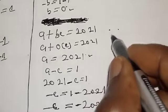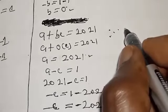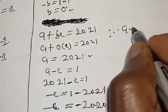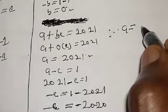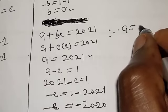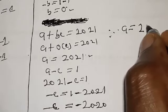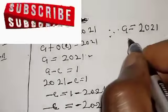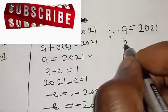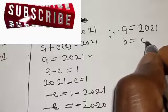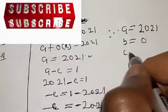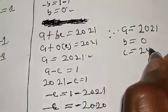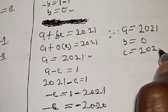Therefore, from the first case, we have A equal to 2021, B equal to 0, and C equal to 2020.